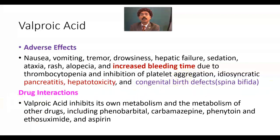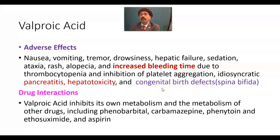There may be idiosyncratic pancreatitis and hepatotoxicity, especially in children under the age of 2. If pregnant women take valproic acid, they may develop fetal valproic acid syndrome, especially spina bifida, along with heart problems, facial abnormalities, and shortened digits of the fingers and toes. To prevent these congenital birth defects, a high dose of folic acid should be given during and even before pregnancy, and continued throughout the pregnancy.